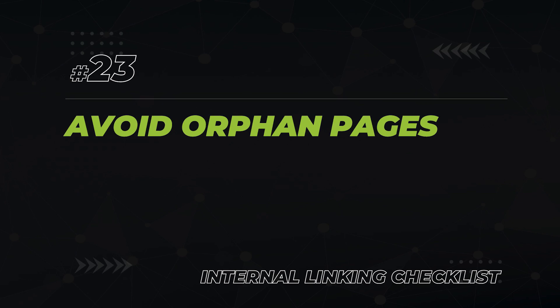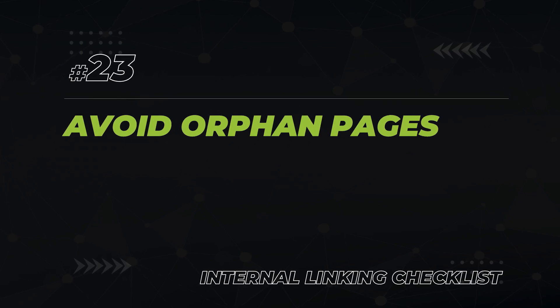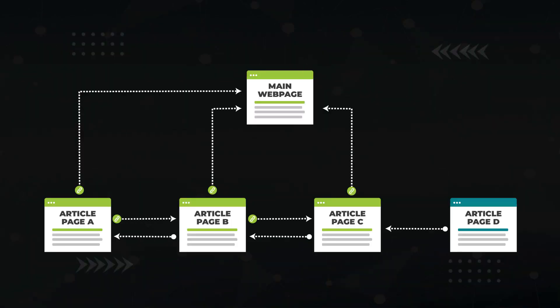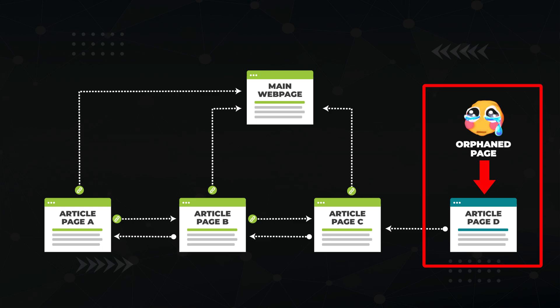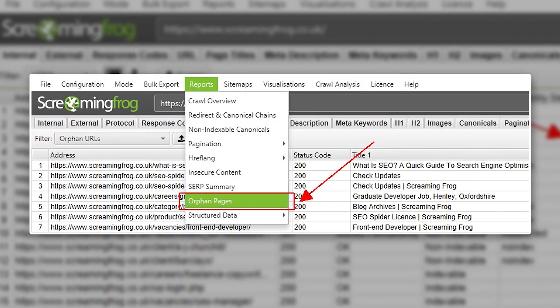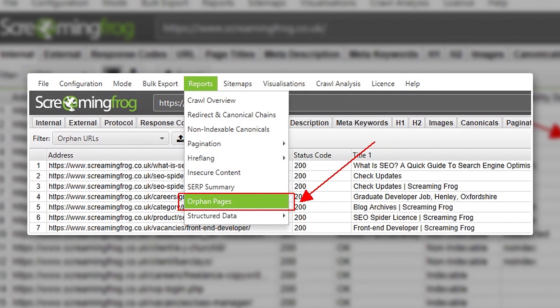Your next check is to make sure you don't have any orphaned pages. Every page should have at least one internal link going to it. If a page doesn't have an internal link, it's on an island of its own — it's orphaned and inaccessible by Google, which is a no-no. You can use the free version of Screaming Frog to check for orphaned pages.